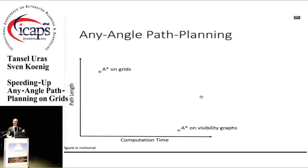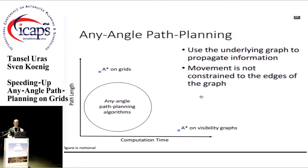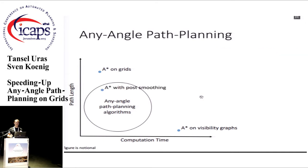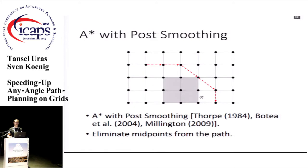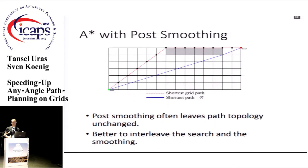With these two methods, there's a trade-off between path length and computation time. Any-angle path planning algorithms aim to offer better trade-offs. They use an underlying graph representation like grids, but don't constrain movements to use the edges of the graph. A simple example is post-smoothing: you find the shortest path on the grid and then smooth it by shortcutting midpoints. This is not a perfect solution, because smoothing often doesn't change the topology of the path, and the search doesn't know how short the smoothed path will be.